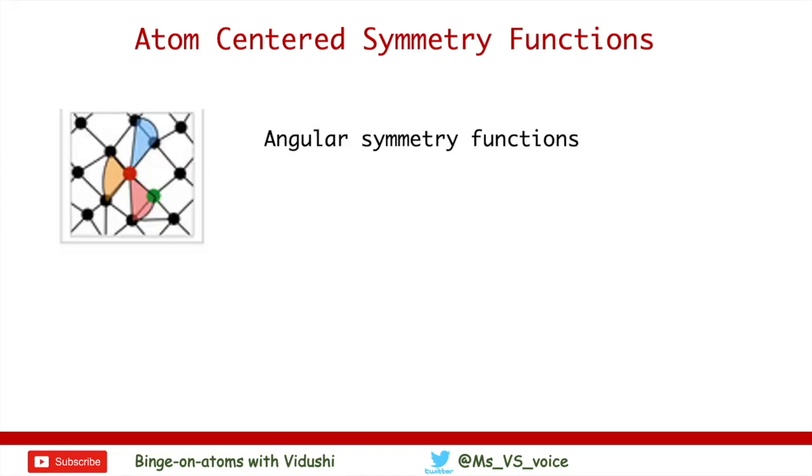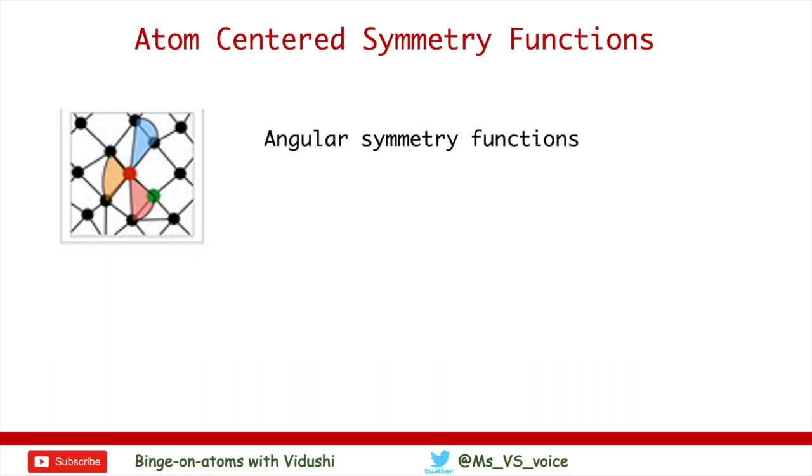Let's discuss how you can incorporate angular information. There are two types of angular symmetry functions defined, G4 and G5, which sum over three body components, three atoms centered at reference atom I. These functions include sum of cosine functions of angle theta_ijk, centered at reference atom I. You can use either, but I personally prefer G4 over G5 because G5 is not constrained by cutoff radius and can have larger terms in the summation.